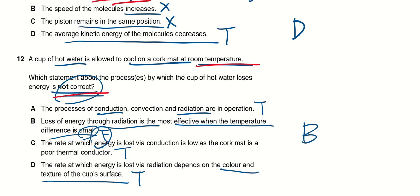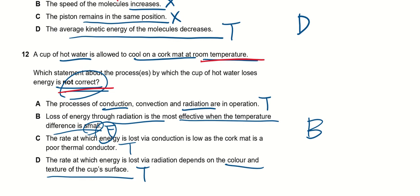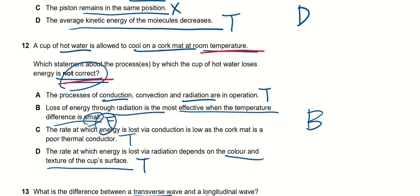Radiation, yes, because as long as it's hotter than the surrounding it will emit thermal radiation. Loss of energy through radiation is the most effective when the temperature difference is small—this is false, actually it is the opposite. The loss of energy through radiation is the most effective when temperature difference is large. The rate at which energy is lost via conduction is low as the cork mat is a poor thermal conductor—this is true. And the rate at which energy is lost via radiation, you think of color and texture—this is true.